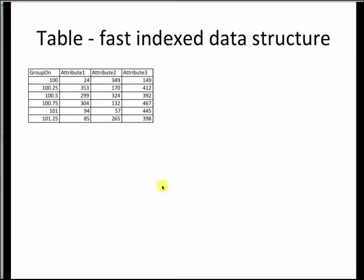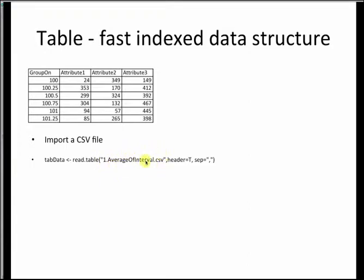The last data type I want to talk about is a table, which can be thought of as a fast indexed data structure. In many cases we have data in the form of a frame or grid. R provides a table data structure to handle this kind of data. You can store this data in a regular text file and import the CSV file into R, then read that file into a variable. The command I'm using is read.table, which takes arguments for the file name, header — true if there is a header — and separator, which is a comma for CSV files.